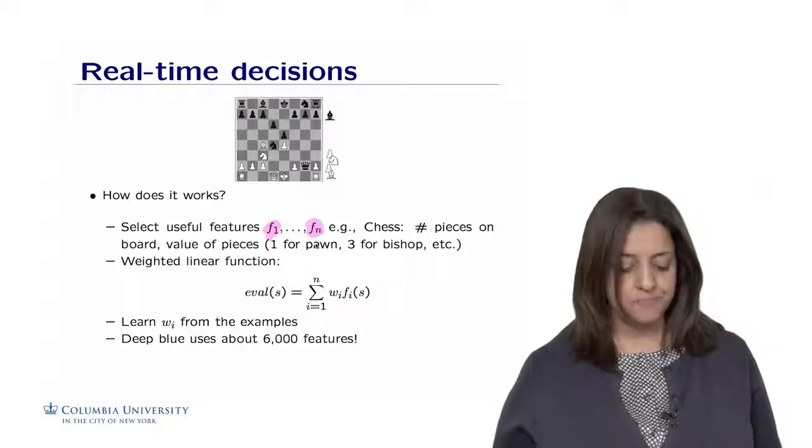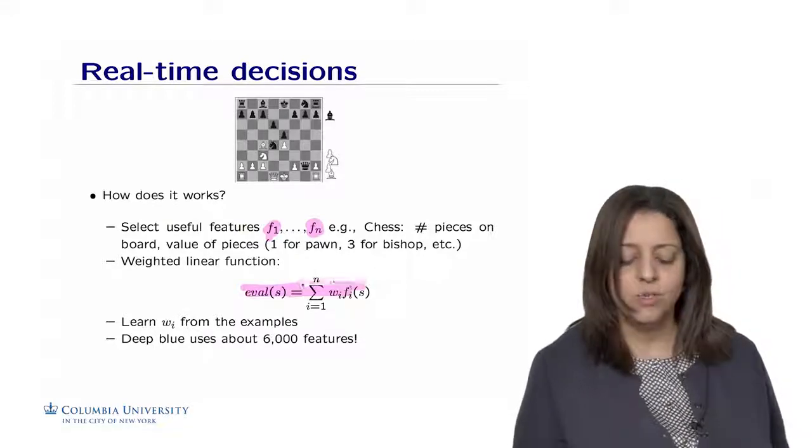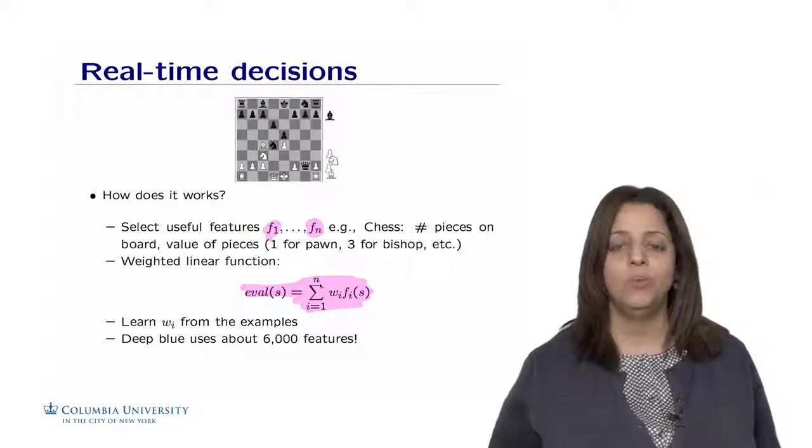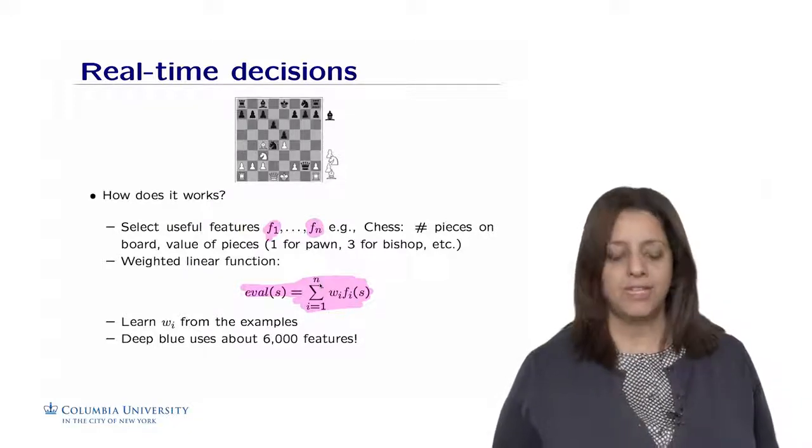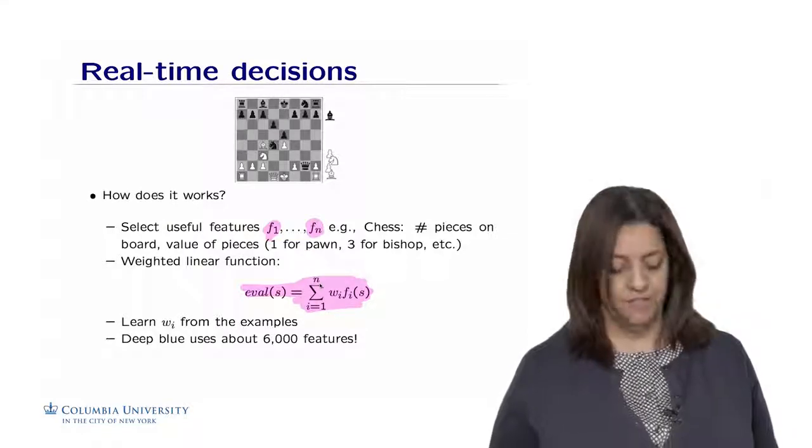So eval of s would be the sum of the w_i times f_i of s, which means that we're going to put a weight to each of those features and have the evaluation function at the state s being the weighted sum of those features.